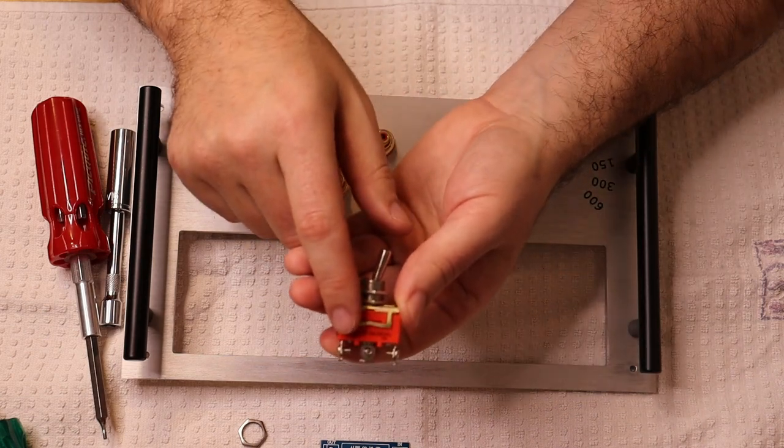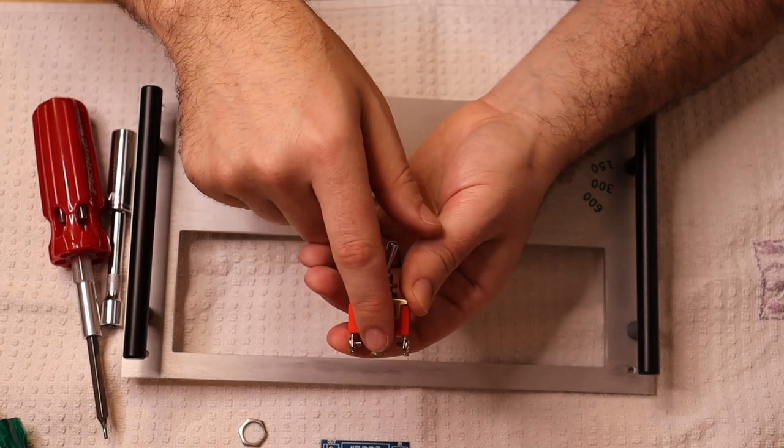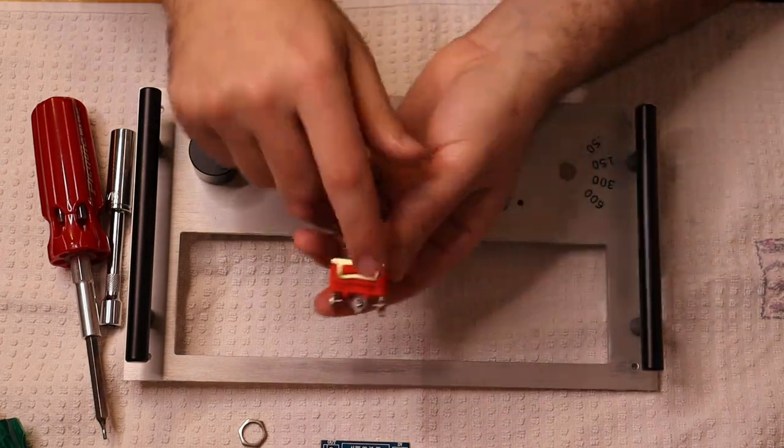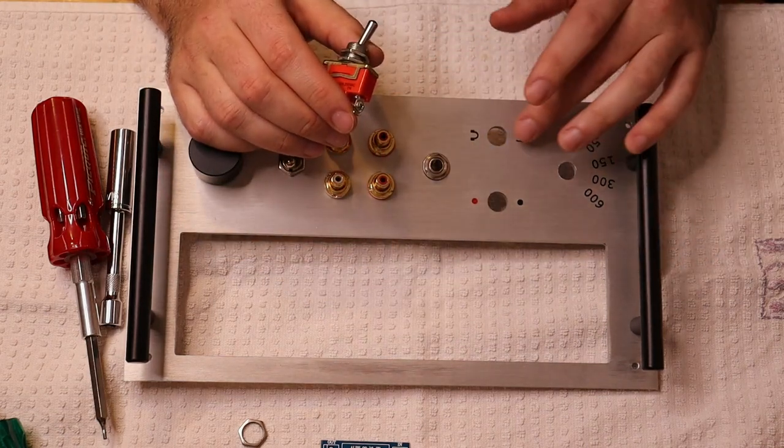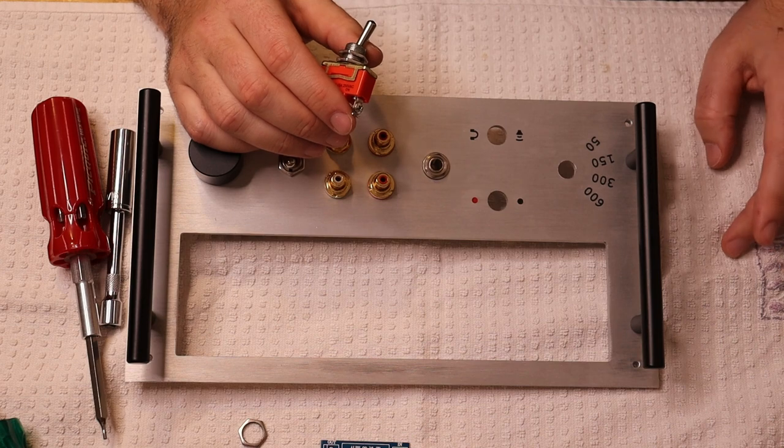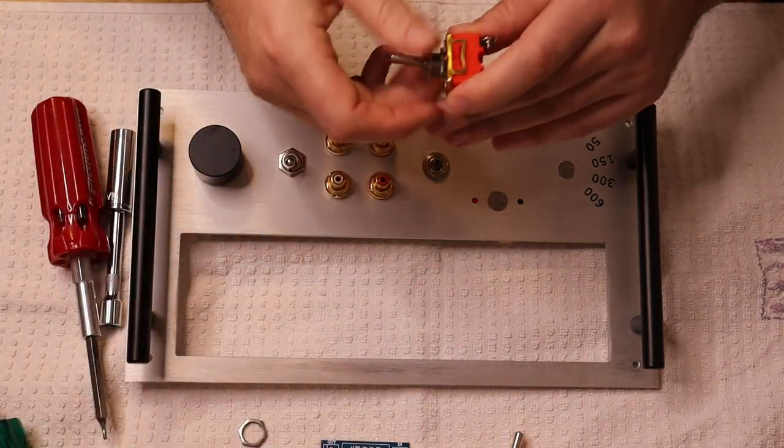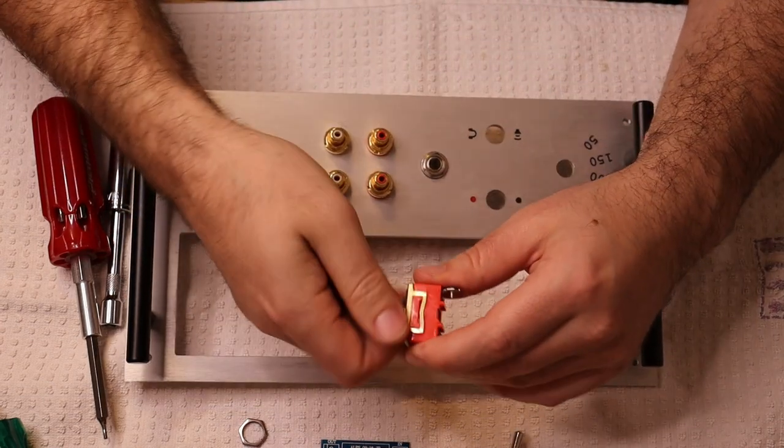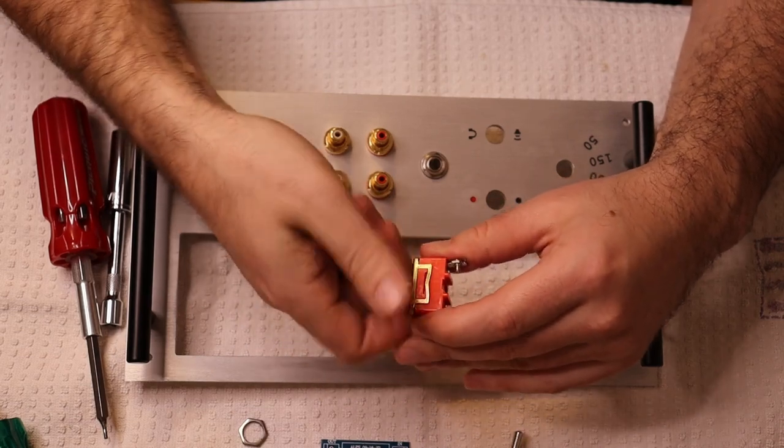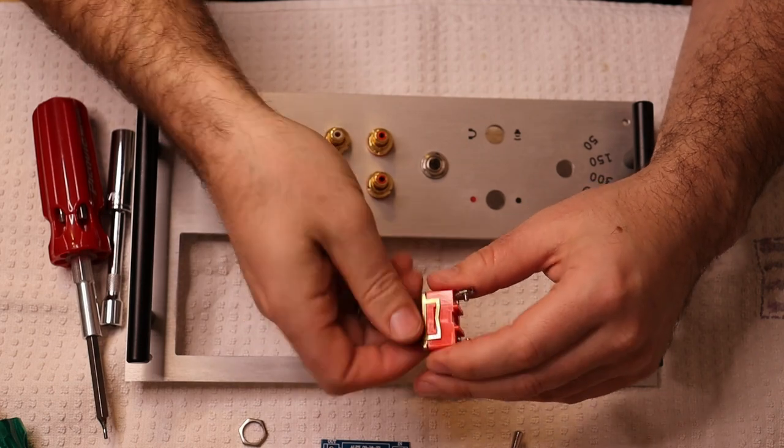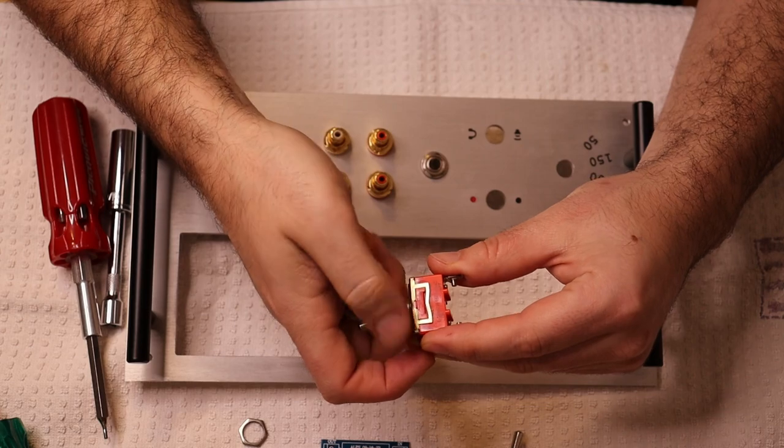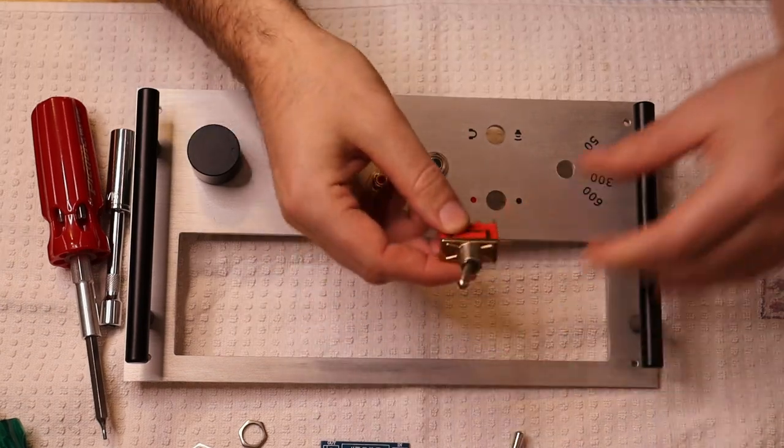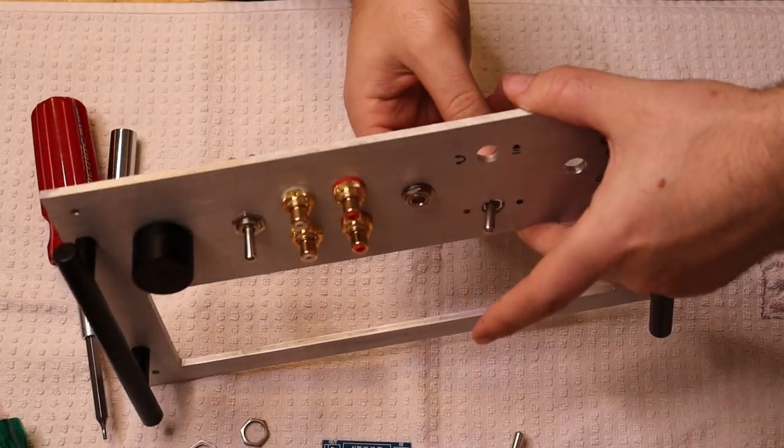And this one is an on off on. So this is the one that's going to switch between the ground. So the center pole is going to go to the ground plane. And one side is going to go to the headphone jack ground and the other side is going to go to the ground for the outputs for the speakers. So that's how we're going to switch those out. So let's start off with the simplest one. So off is up here. On is down here. So currently it's in the on position.